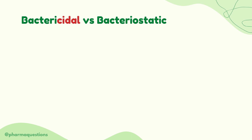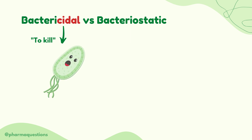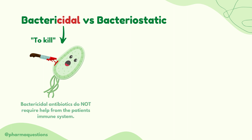Bactericidal antibiotics work by killing the bacteria. This can be remembered by the word 'cidal', which means to kill — if you think homicide, genocide, etc. And because these antibiotics kill the bacteria themselves, they do not require any help from the immune system.